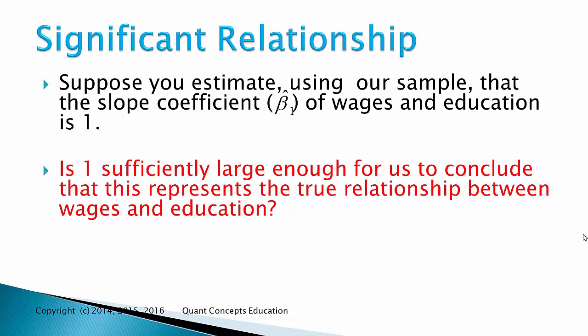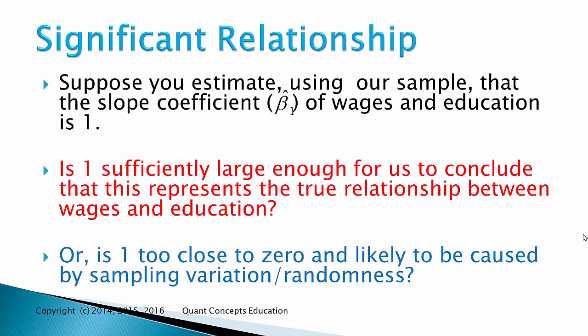Is one sufficiently large enough for us to conclude that this represents the true relationship between wages and education? Or is one too close to 0 and thus likely to be caused by sampling variation and randomness? That is, is one sufficiently different from 0 for us to conclude a non-zero relationship between wages and education.